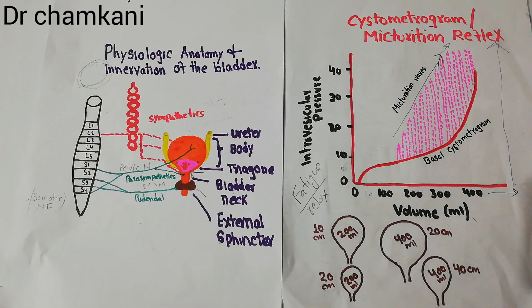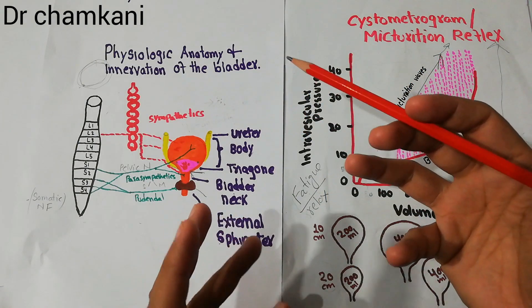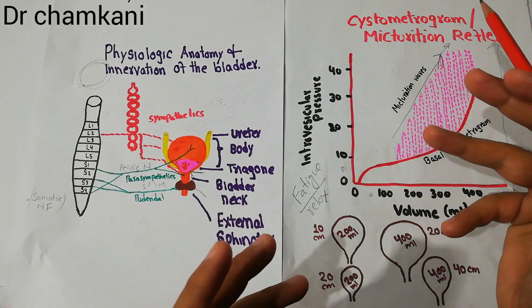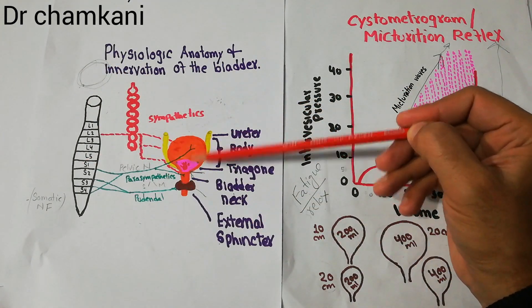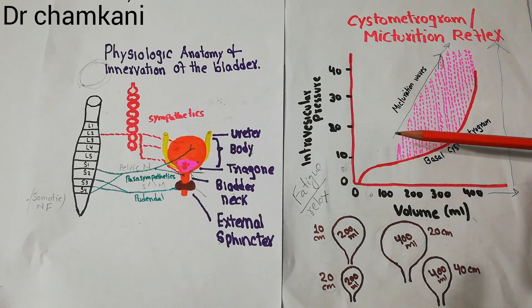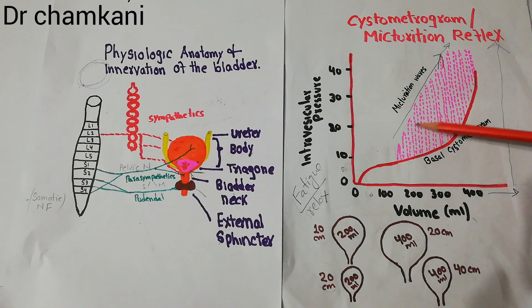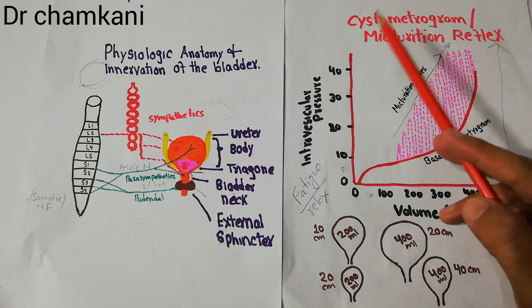The micturition reflex will start again after some time. The environment also plays an important role — up to a certain point, humans can maintain voluntary control, and when an appropriate environment such as a toilet is available, a person can voluntarily decide to inhibit the external sphincter and allow urination. The micturition reflex keeps generating micturition waves with increasing bladder volume, and with time, the strength of both the basal tone and the micturition waves keeps increasing. That covers the micturition reflex.